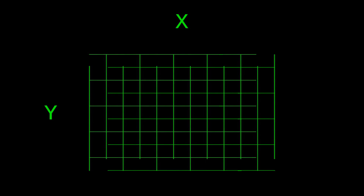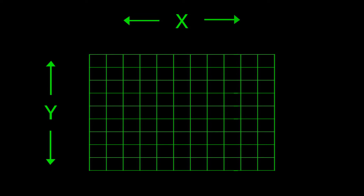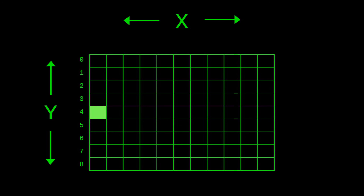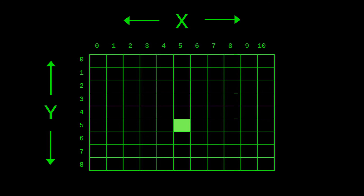Images are grids of pixels organized in rows and columns called the X and Y axis. The Y axis is up and down, and the X axis is left and right. If that's too hard to remember, then Y is up, X is across. As we move down the Y axis, the Y value increases. And as we move right on the X axis, the X value increases. So this chartreuse dot here is located at X8, Y5.